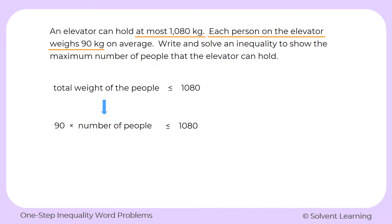Usually when we're writing equations and inequalities, we don't use words — we can use variables for anything we don't have a number for. So instead of writing 'number of people,' let's use the variable n. We can rewrite this as 90 times n is less than or equal to 1,080. Now we have an inequality we can solve for n. On the left side we have 90 times n, and we'll get n by itself by dividing by 90.